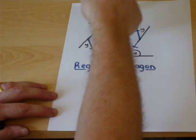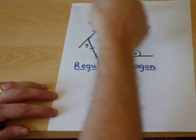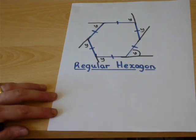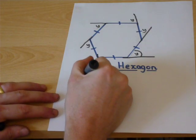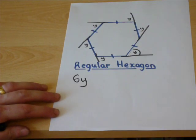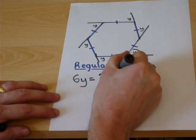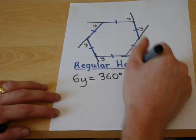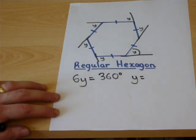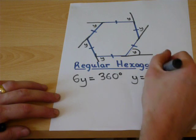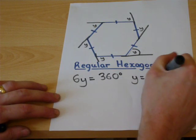But these all form effectively a circle. They wrap around the shape to create a full rotation. There are six lots of those exterior angles. They must equal 360 in total. So each exterior angle must be 60 degrees.